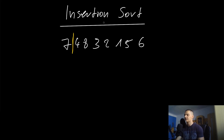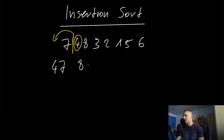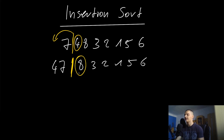Now what we do is go through the list, pick the next element, and insert it into the sorted list where it belongs. We take four and insert it into the sorted section. Four is less than seven, so we insert it before the seven. The sorted part now looks like four, seven. Then we look at the next element, eight, and insert it — giving us four, seven, eight. The sorted section grows with each step.